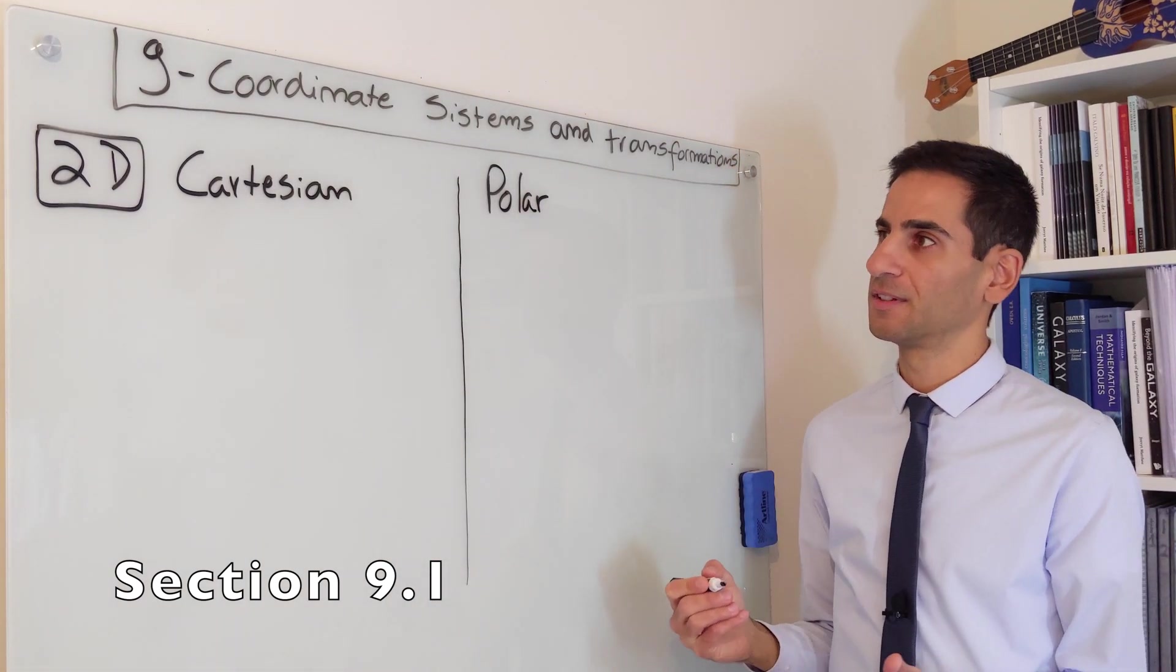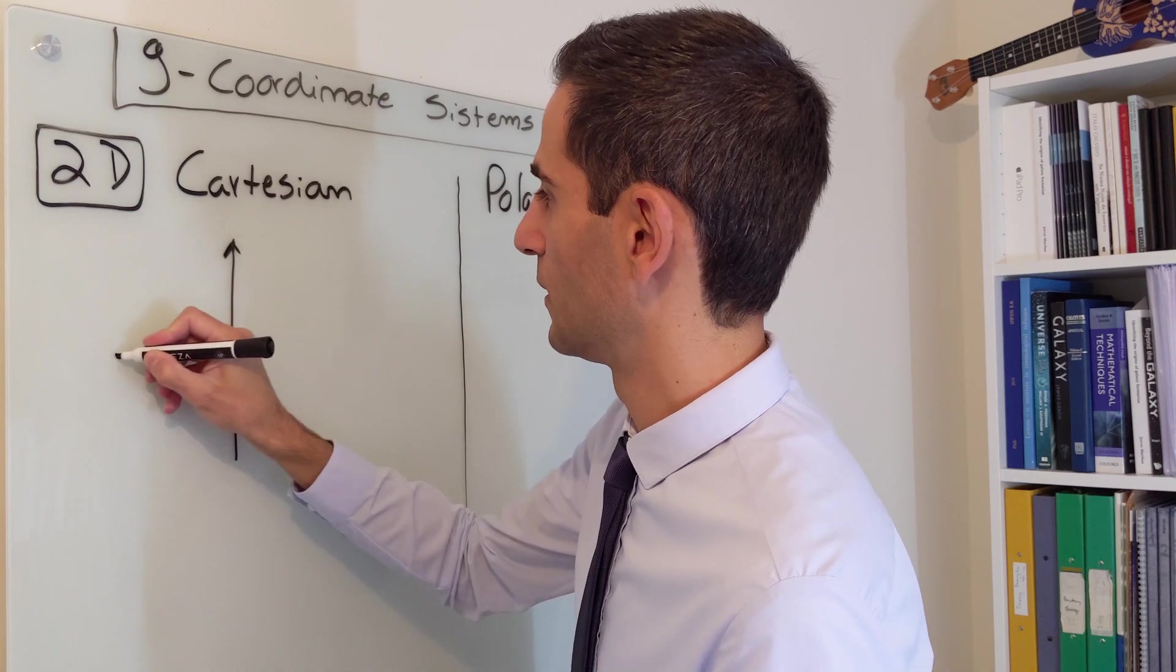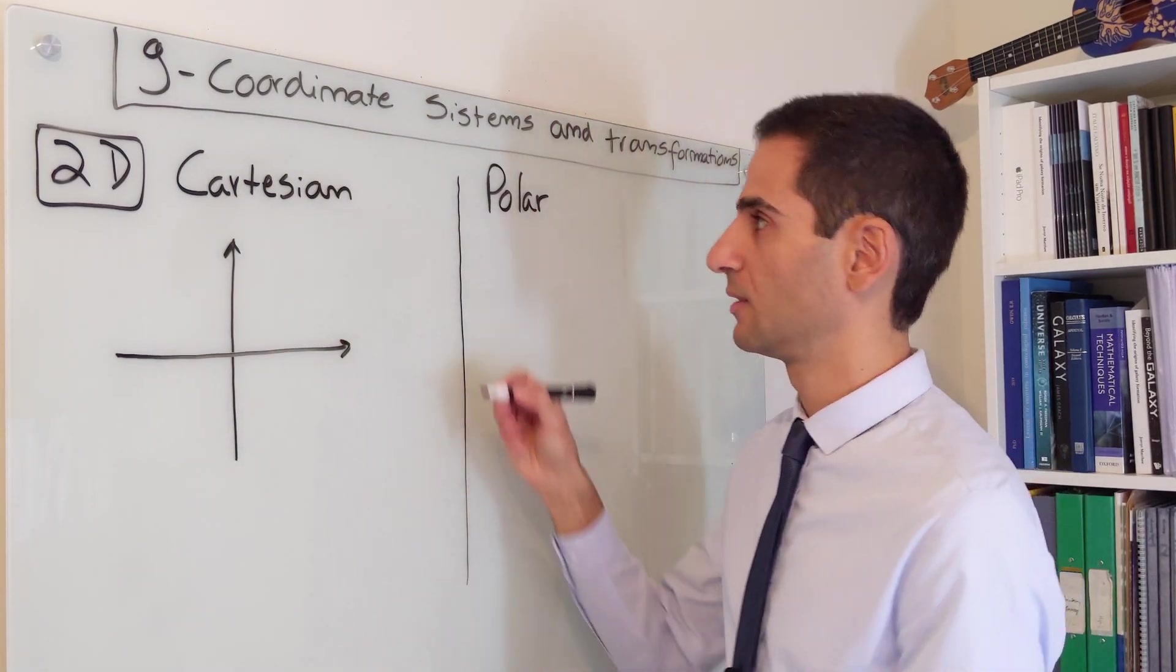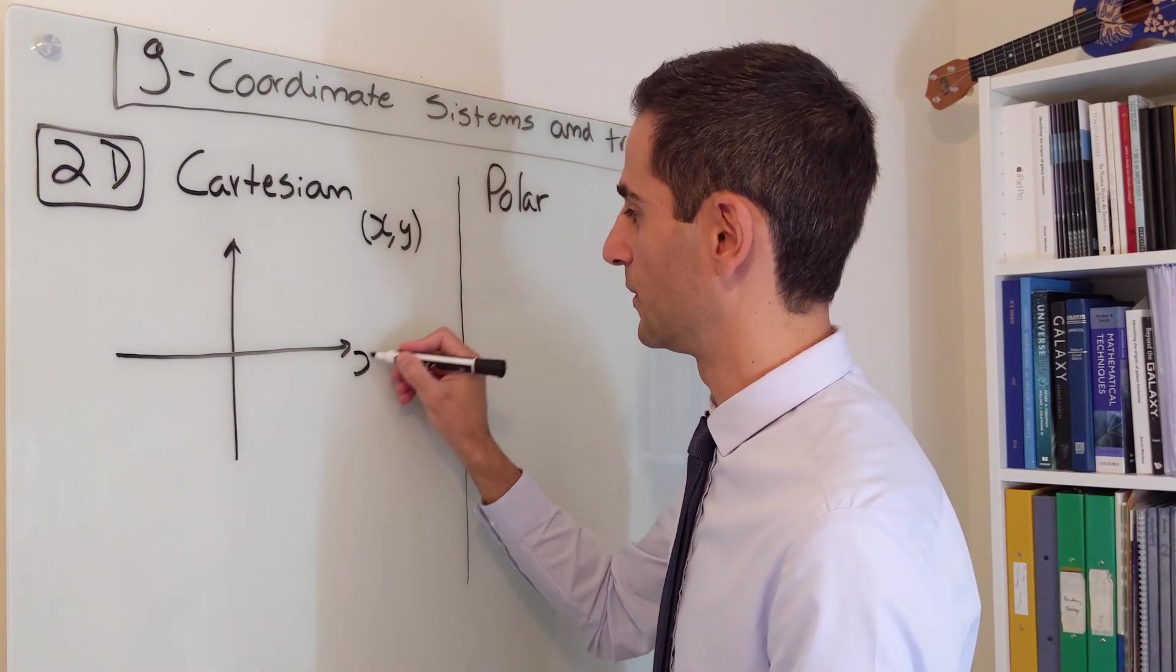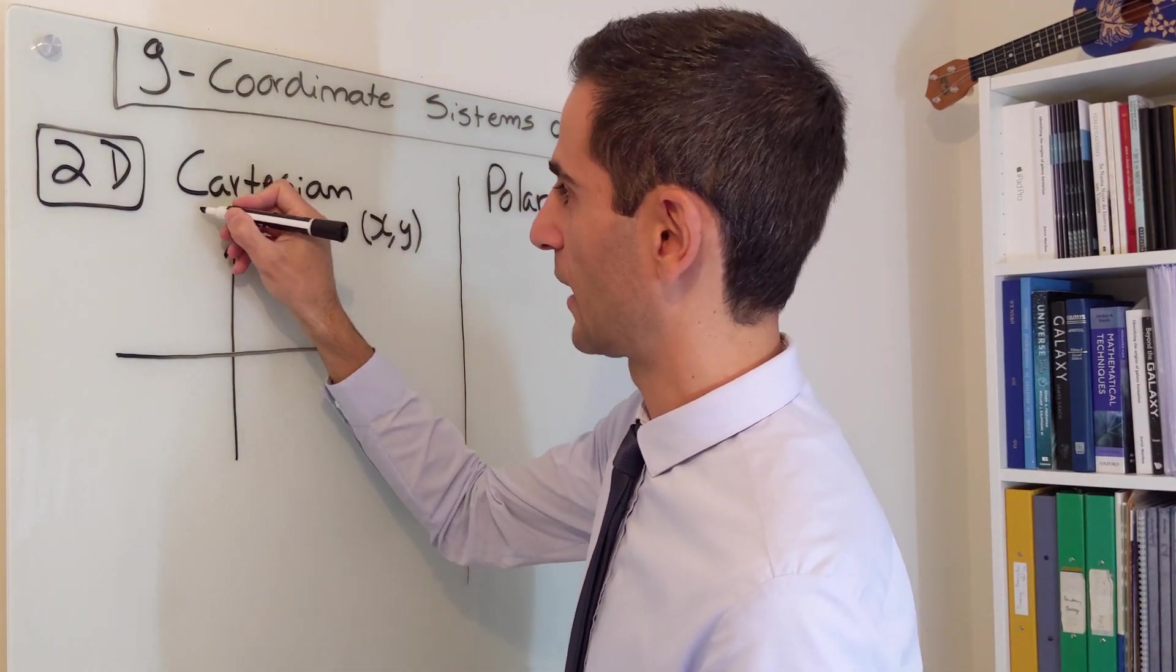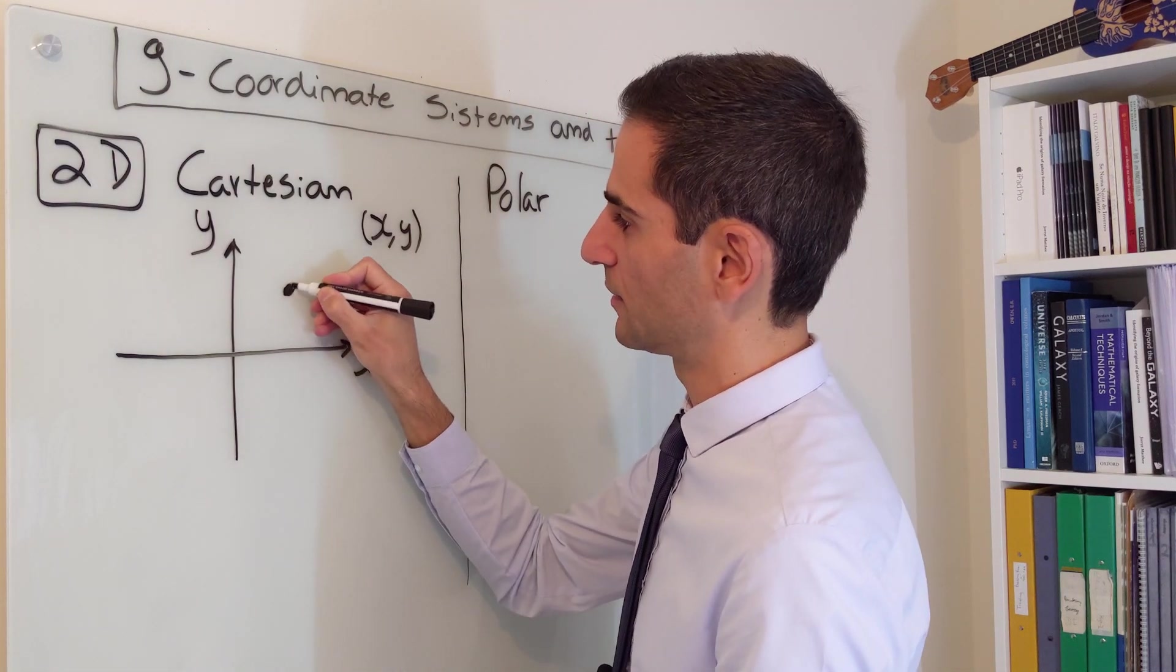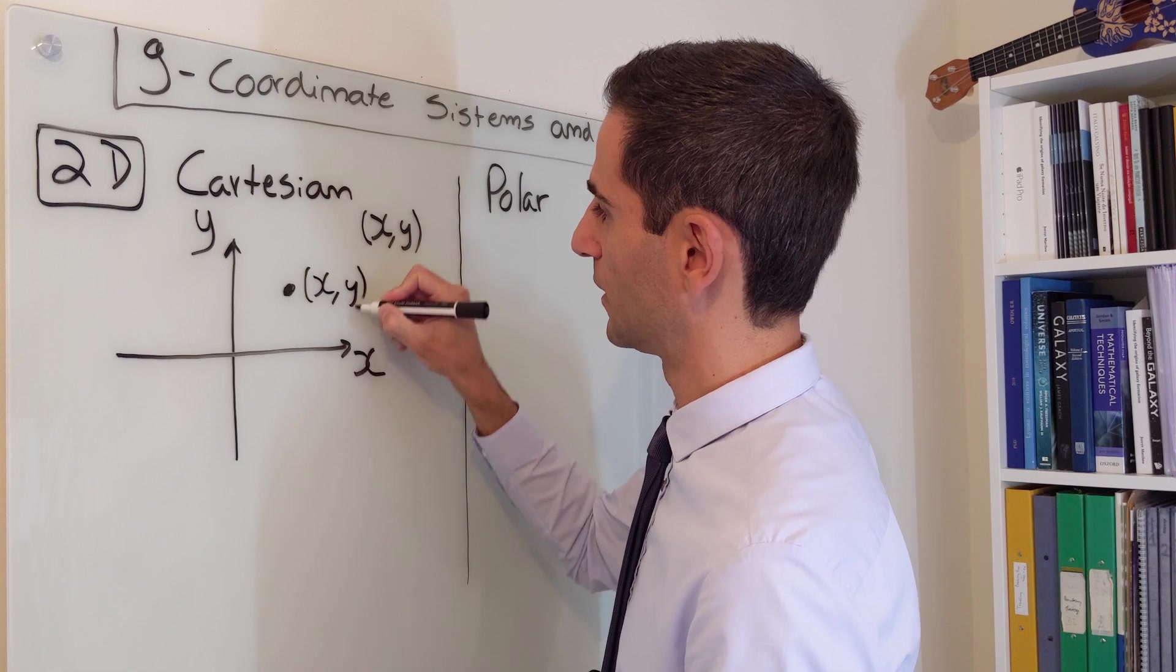The big difference is that in Cartesian, you're very aware of the fact that we would represent every point by a combination of x and y. We would label the horizontal axis as x, the vertical axis as y. And a specific point, say this one, would be given by x and y coordinates.